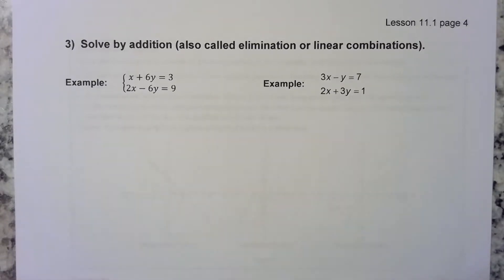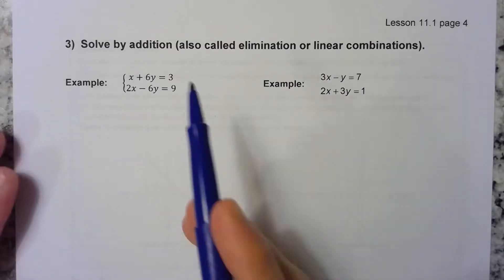So the third method for solving a system is called solving by addition. You can also call it solving by elimination, and I do use both of those words whenever I want you to solve by this method. I don't really ever use linear combinations, although you might see it in your textbook. So just to introduce this particular method,